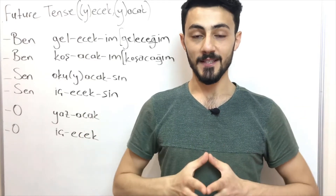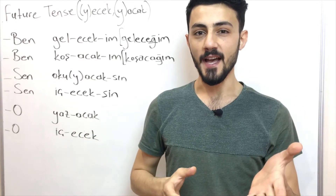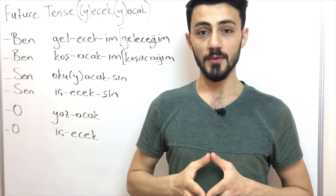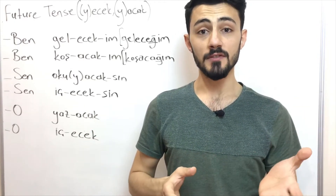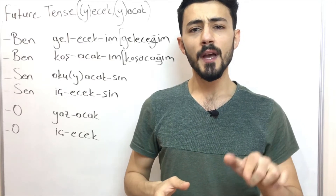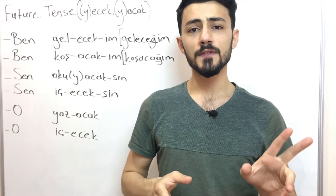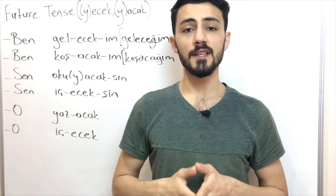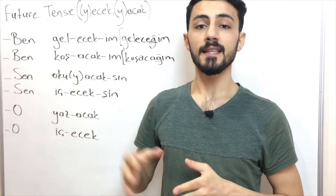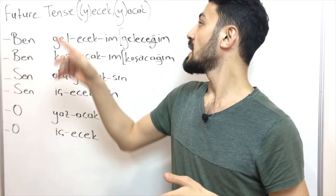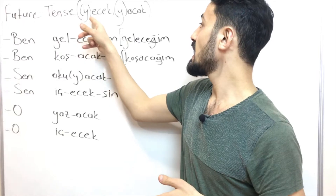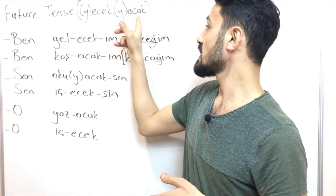Hello everyone, and welcome back. Today I'm going to be talking about future tense. We have two forms of suffixes in this rule: these are -ecek and -acak.